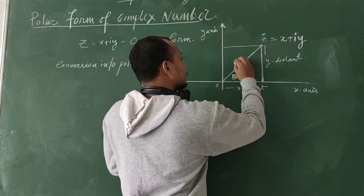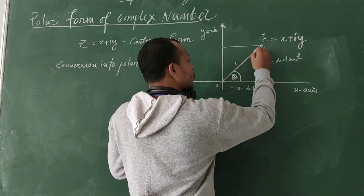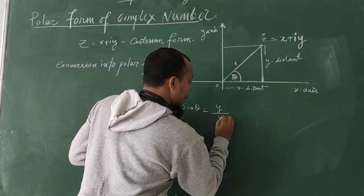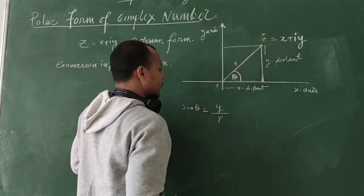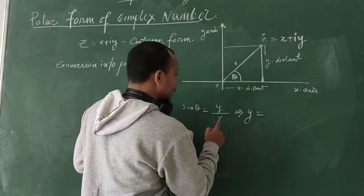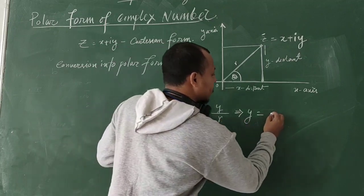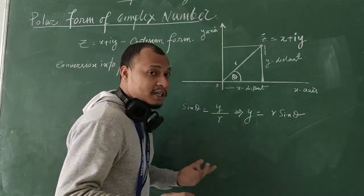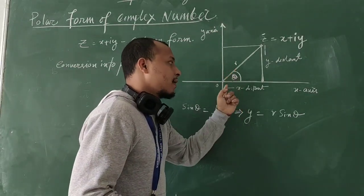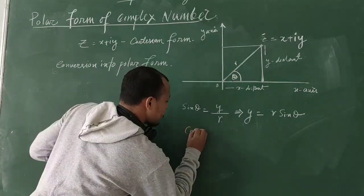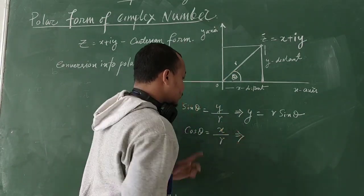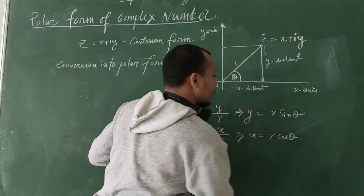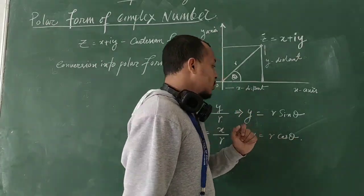sinθ is equal to Y by R, where R is the distance from the origin to Z. So Y is nothing but R sinθ. Similarly, cosθ is X by R, so X is nothing but R cosθ.